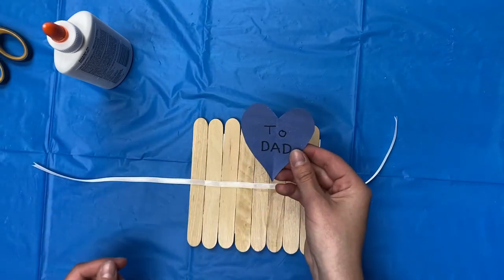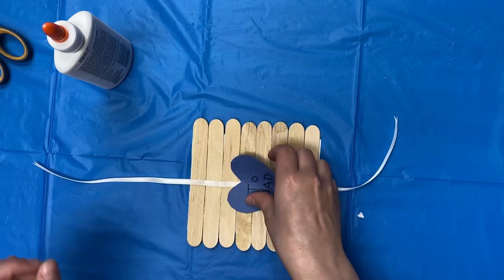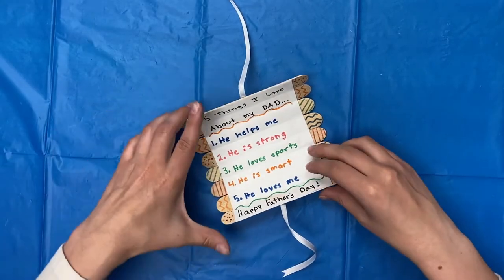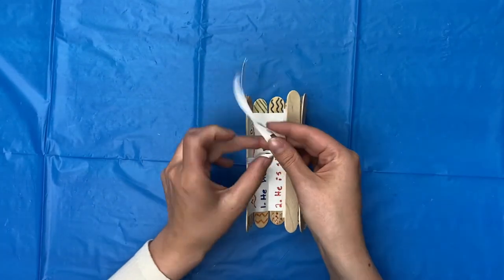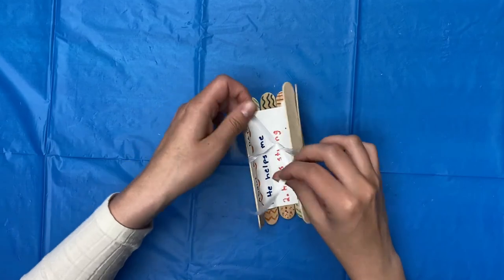And then I cut out a heart that I'm going to glue to the back. Now you can take your card, roll it up, and tie it.